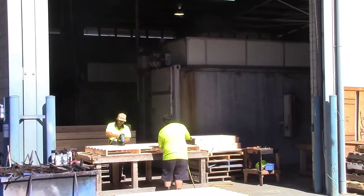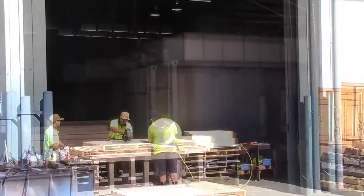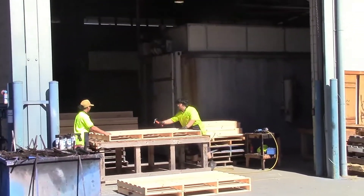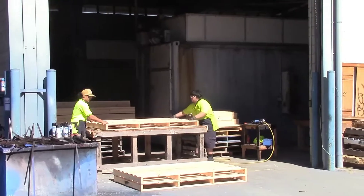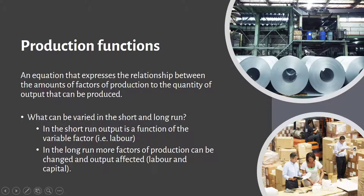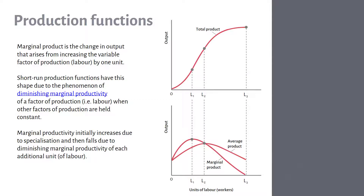In the short run, it would be hard to simply double production if everybody's already at full capacity because there's not much room for more machines. In the long run, we could do that more easily. Let's look at how we would express that in a graph.